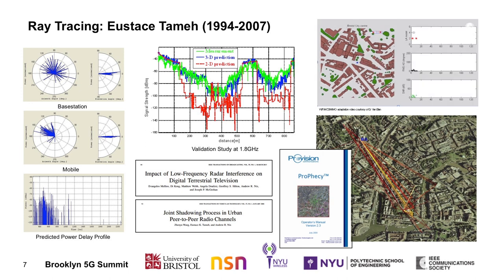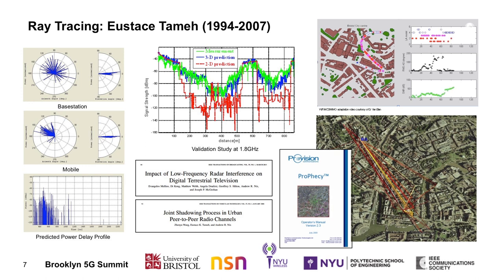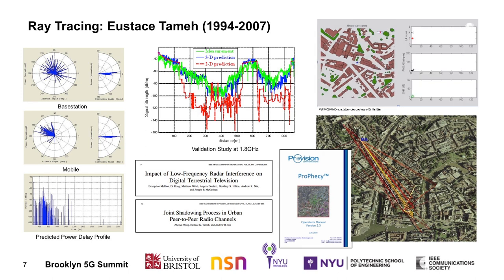On the left-hand side of the slide, you can see the double-directional spatial data that comes out of our model — the azimuth and elevation spreads at both the base station and the mobile. This double-directional data has become really important for MIMO systems and also as we look towards beamformers in 5G. We're also able to predict wideband impulse responses out of these tools. This particular model became known as Prophecy and was licensed to a number of companies and organisations.